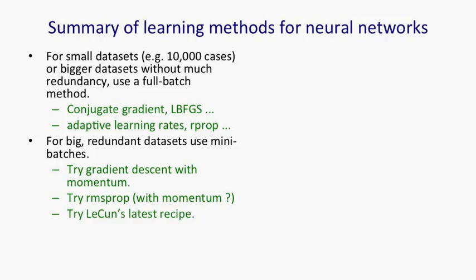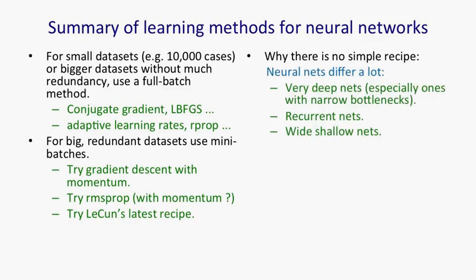Finally, you could find out whatever Yann LeCun's latest recipe is and try that — he's probably the person who's tried the most different ways of getting stochastic gradient descent to work well, so it's worth keeping up with whatever he's doing. One question you might ask is: why is there no simple recipe? We've been working with neural nets, including deep neural nets, for more than 25 years, and you'd have thought we'd have come up with an agreed way of doing the learning. There are really two reasons why there isn't a simple recipe. First, neural nets differ a lot.